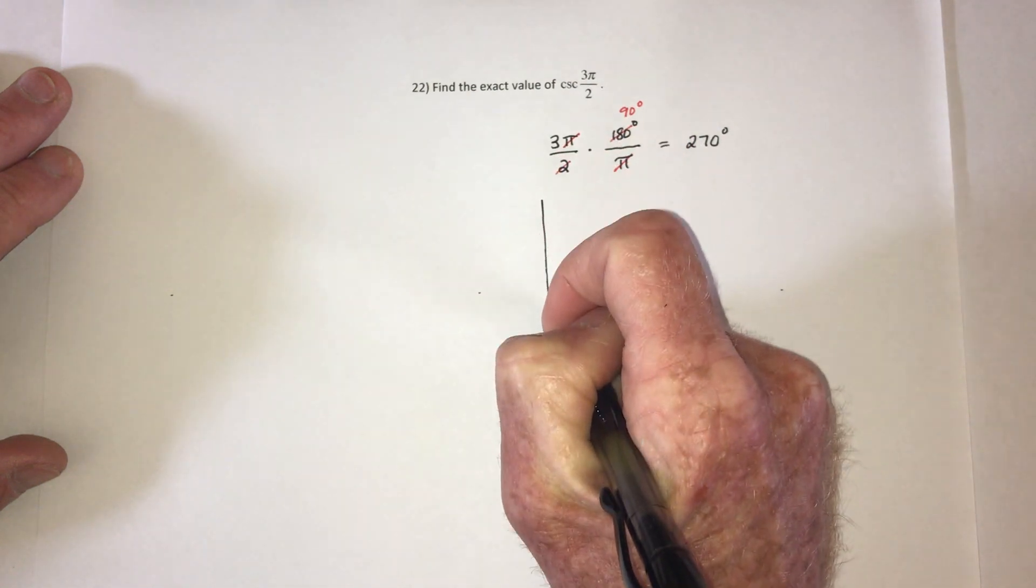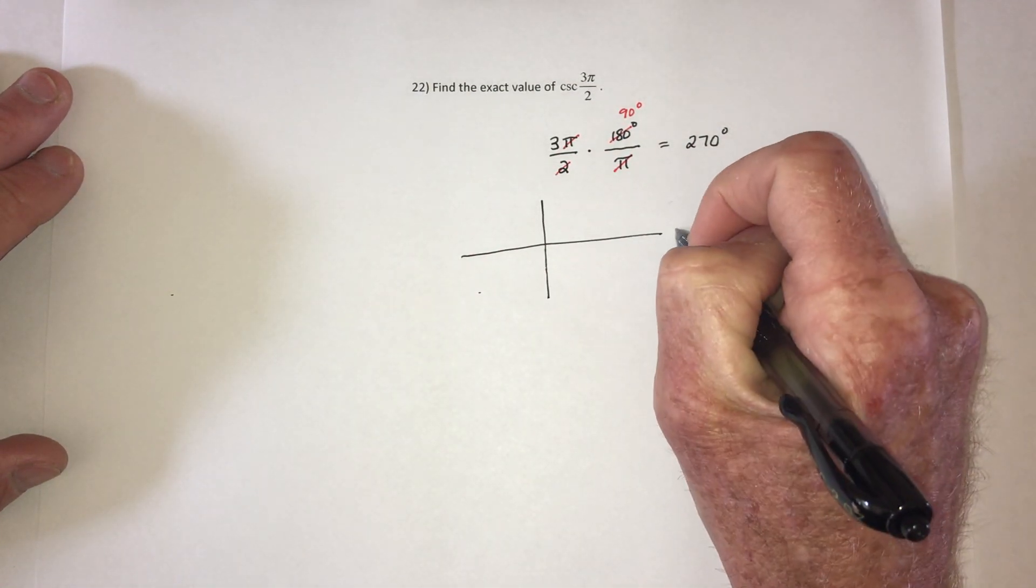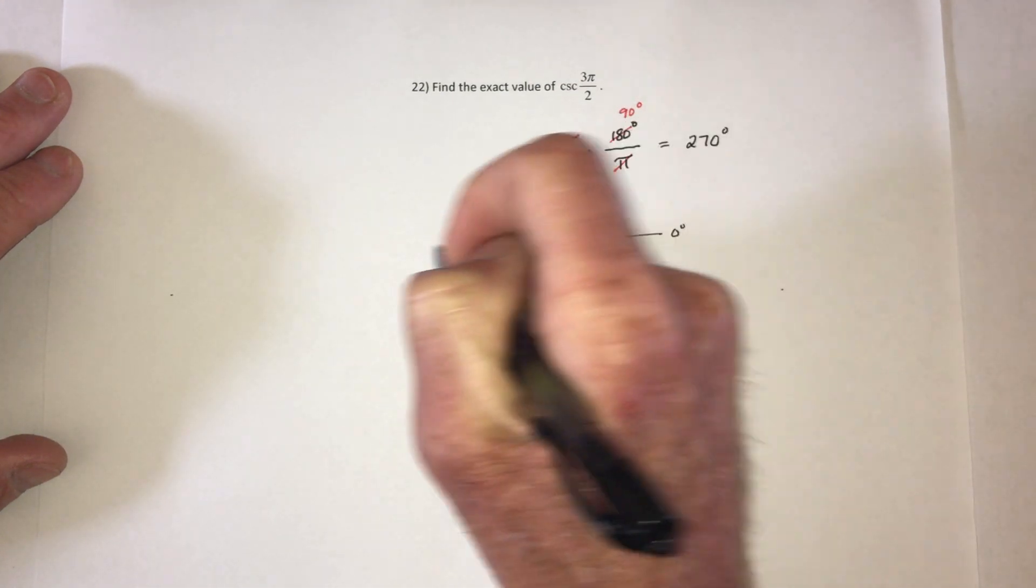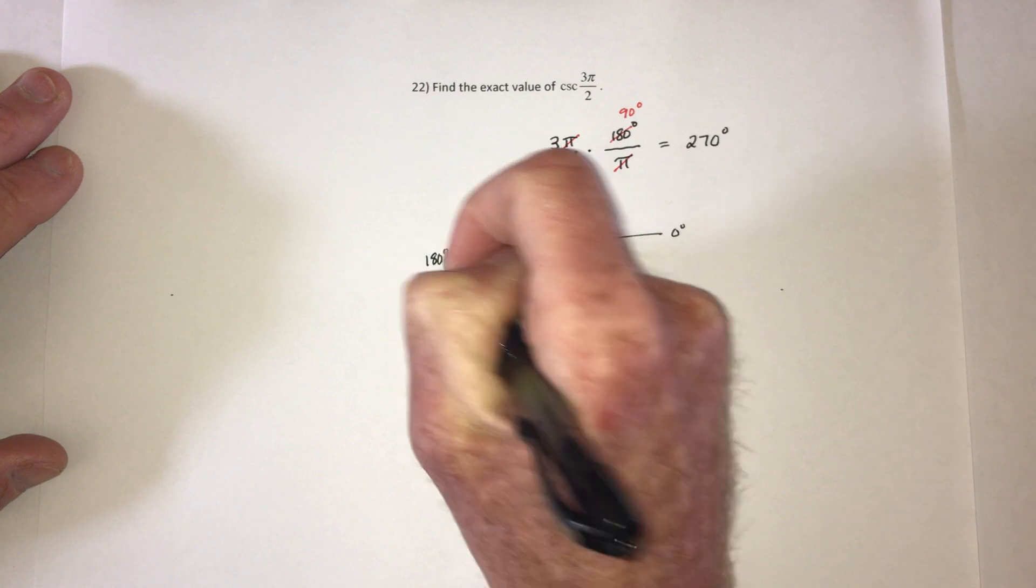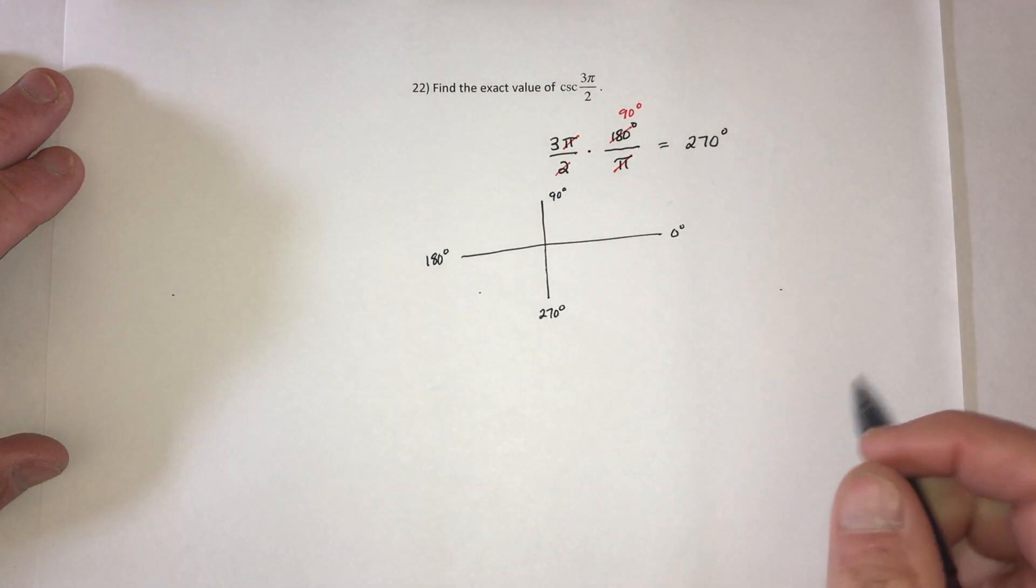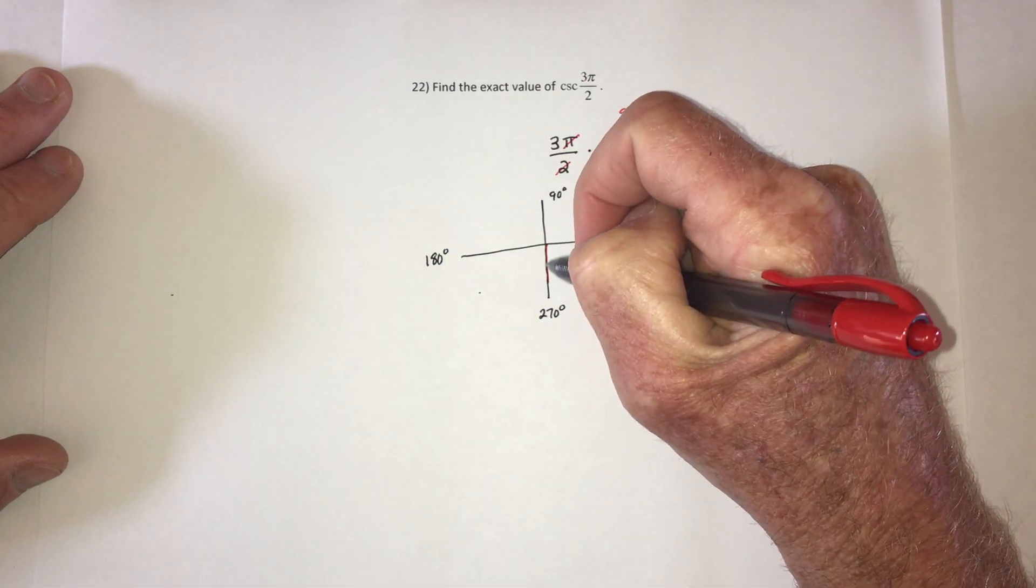So what is this talking about, 270? This would be 0 degrees, this is 90 degrees, this is 180 degrees, and down here is 270 degrees. So it's basically saying that the angle is like this.